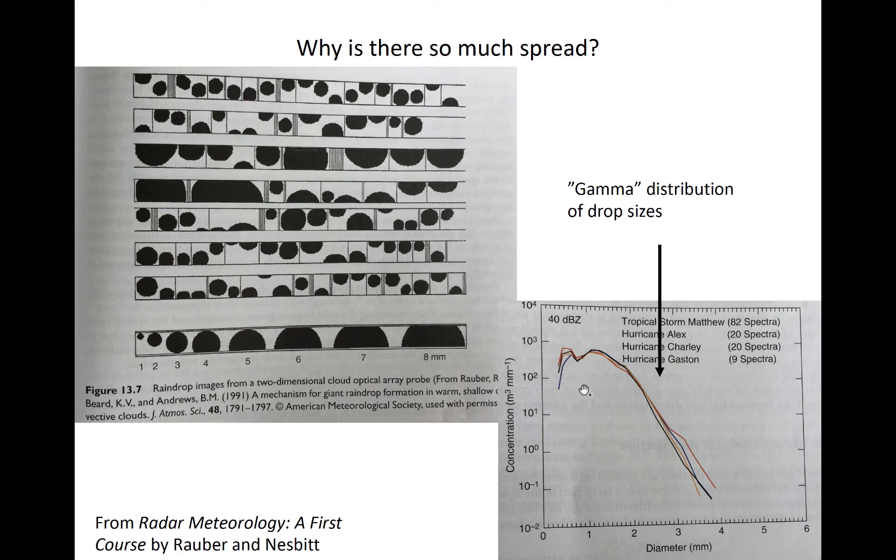The bottom right panel shows examples of drop size distributions seen in various tropical cyclones, with each color representing data from a different storm. And the size of the drop is at the bottom and the number or concentration of those drops in logarithmic scale is on the y-axis.